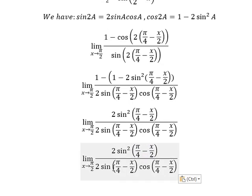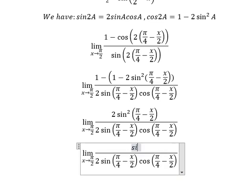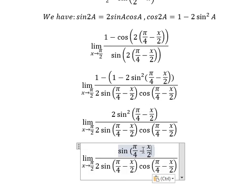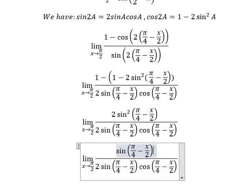This one divided by this one, this one divided by this one. So we will have it over π/4 minus x/2. This one will simplify.